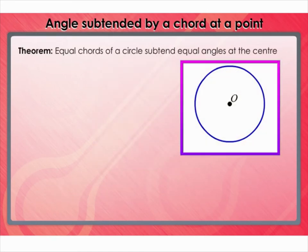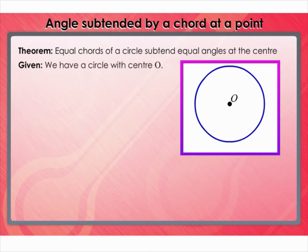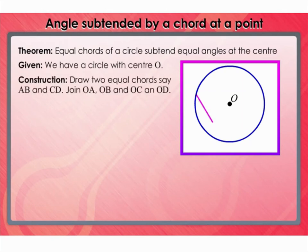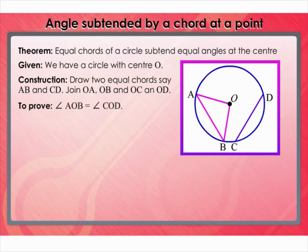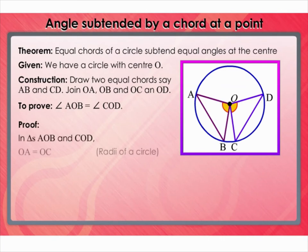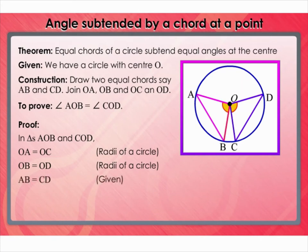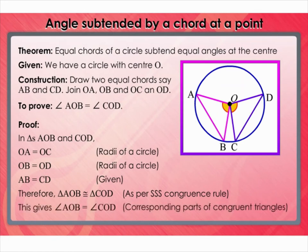Now let's see theorems using the above discussion. Theorem: Equal chords of a circle subtend equal angles at the center. We have a circle with center O. Draw two equal chords AB and CD. Join OA, OB, OC, and OD. In triangles AOB and COD: OA equals OC and OB equals OD since they are radii of the circle, and AB equals CD is given. By SSS congruence rule, triangle AOB is congruent to triangle COD. Therefore, angle AOB equals angle COD by corresponding parts of congruent triangles.